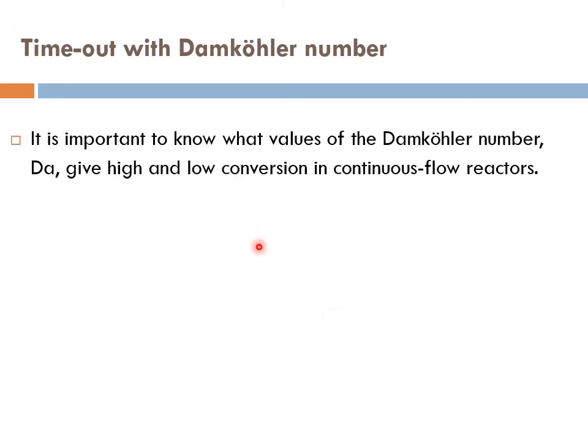It is important to know what values of the Damköhler number give high and low conversion in continuous flow reactors, just like Reynolds number. We say somewhere below 2,000 you have laminar flow; somewhere above 5,000 you have turbulent flow. So the same thing with Damköhler number—you should know these ranges or these numbers.